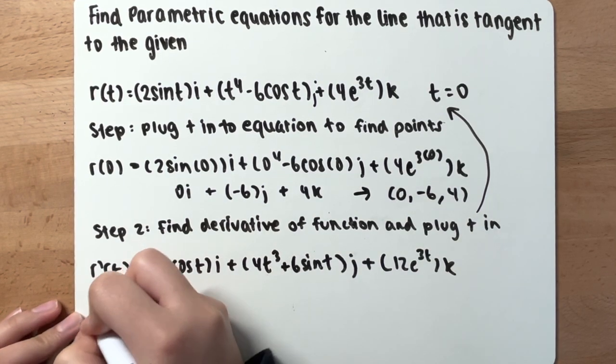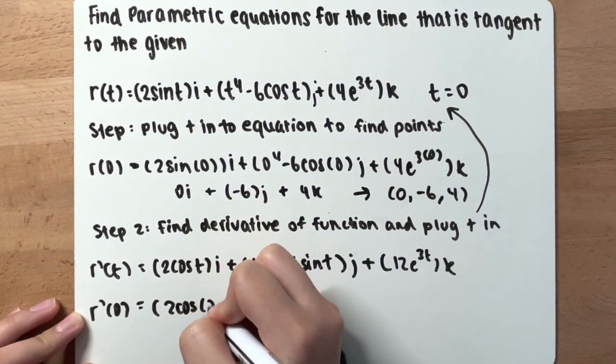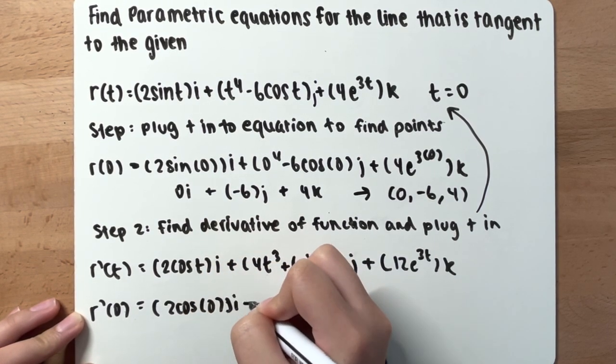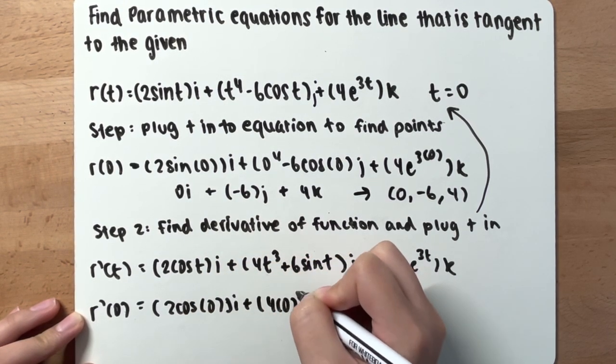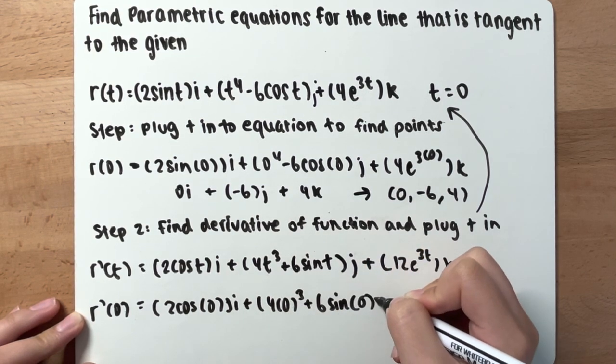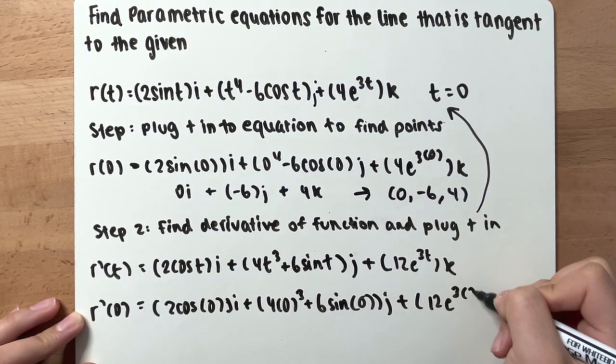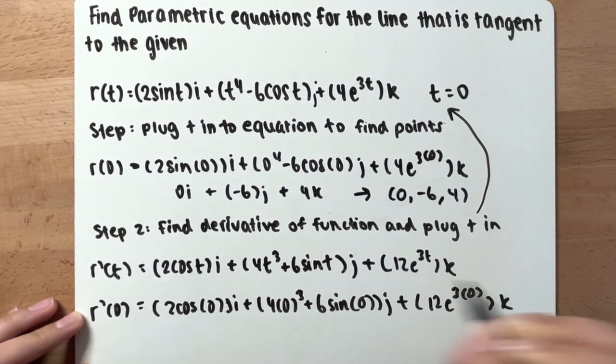Okay, now you plug 0 in for that, you have 2 cosine 0, i plus 4 times 0^3 plus 6 sine 0, j plus 12e^(3·0), k.